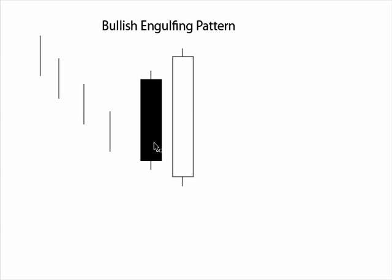What makes this a bullish pattern is that, like the other down days, price gaps down from the close of the previous day and opens lower, indicating it's going to continue the trend downward. And then it surprises us and moves up and closes beyond this candlestick's high.